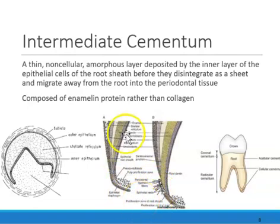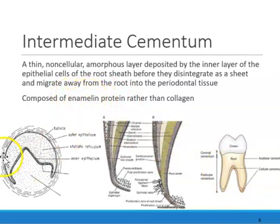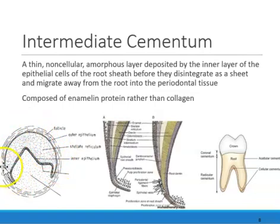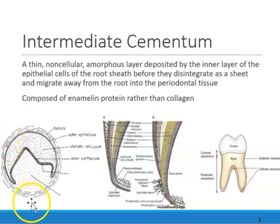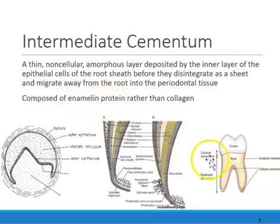An interesting thing is the protein that helps the cementum — it's known as enamelin. Enamelin is the same protein that helps with the enamel. Because the inner and outer epithelial cells form the root sheath, and because it's an epithelial sheet — epithelial meaning the outer layer — it makes the protein enamelin, which is the protein that supports cementum.